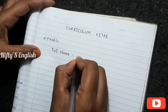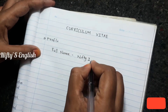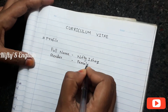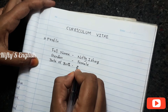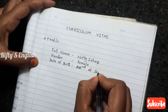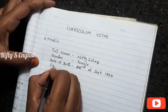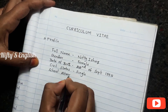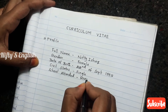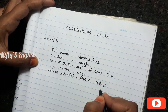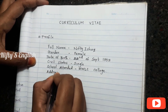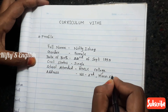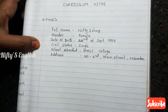Let's start the lesson. First, I put the profile section: full name — Nifty Shark, gender — female, date of birth — 22nd of 1995, civil status — single, school attended — MMLC College. The second one is summary, and the last one is address.